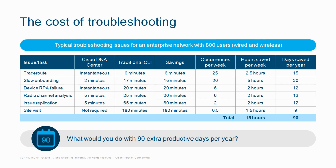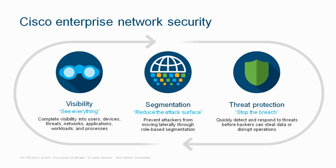In terms of troubleshooting, comparing traditional CLI versus DNA, you can see a lot of difference — saving 15 hours per week and 90 days per year. We are increasing business productivity. You have visibility, segmentation, and threat protection — all three from a single pane.